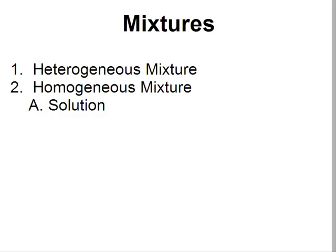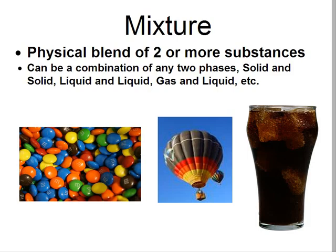A solution is technically a mixture, so we'll first define what a mixture is, define what a heterogeneous mixture is, and a homogeneous mixture. A mixture is technically a physical blend of two or more substances. We have three examples shown in the pictures below. The M&Ms are a physical blend of two or more substances — there are two or more different colors of M&Ms, so therefore they are technically a mixture, though not commonly thought of as one.